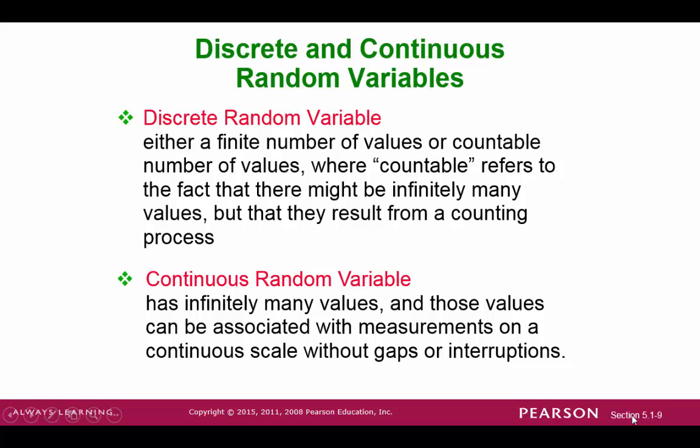A continuous random variable has infinitely many values. And what we can think about in the continuous random variable is that we can fill in the gaps between the whole numbers. Like between 1 and 2, there's a 1.5 and then there's 1.25, 1.75, etc. So everything gets filled in within the real number line.